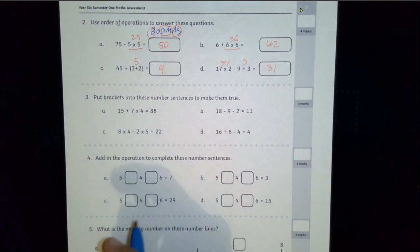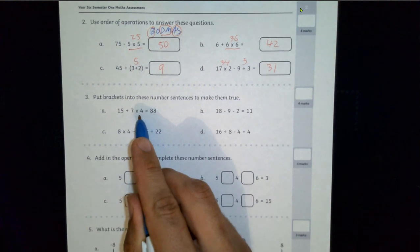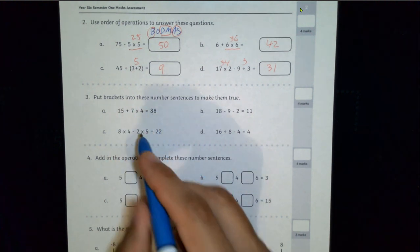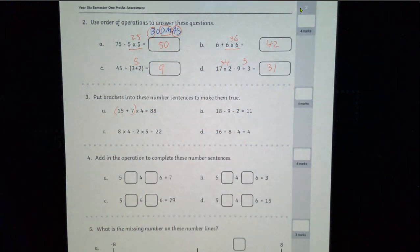Now for question 3, put brackets into these numbers to make them true. I guess you could always just experiment. So for example, I knew straight away 7 times 4 is 28, 15 plus 28 won't get me this. However, if I put it over here, 15 plus 7 is 22, 22 times 4 is 88.